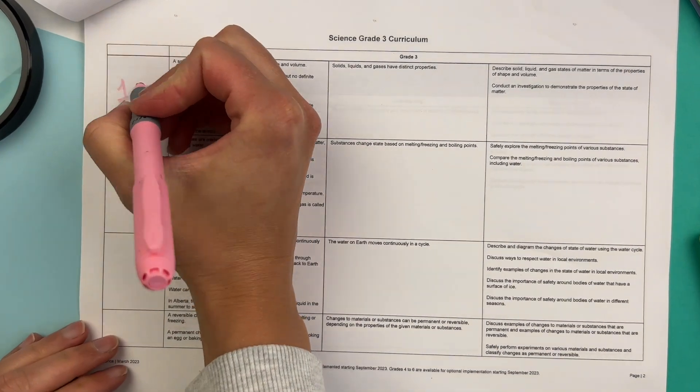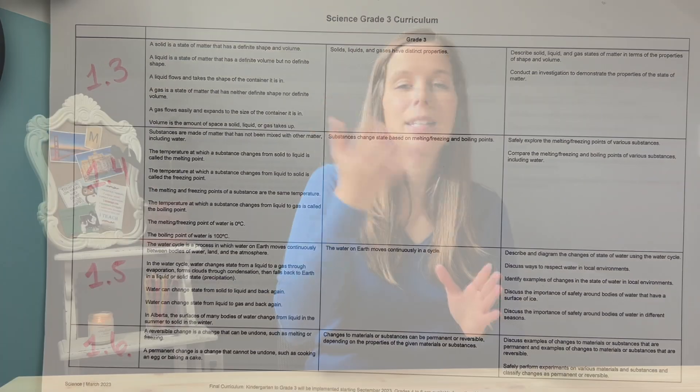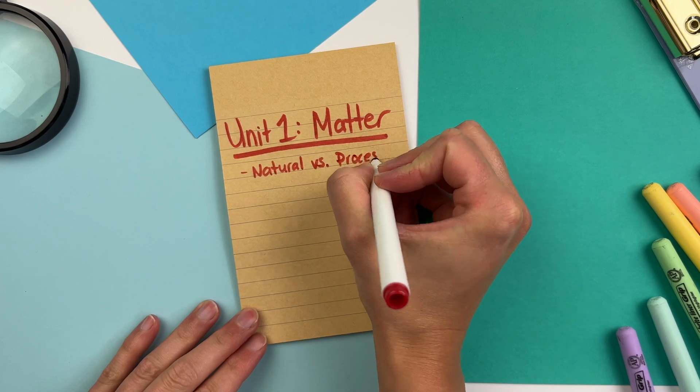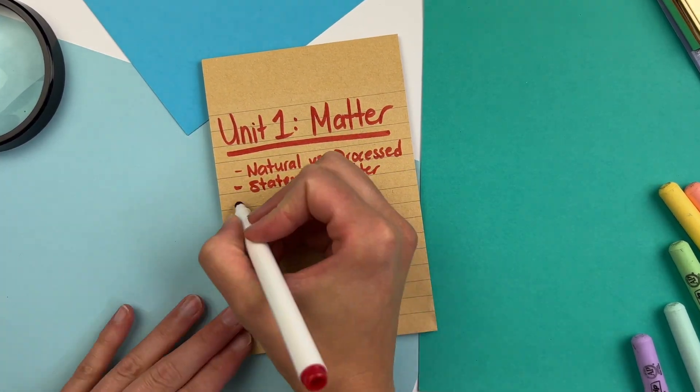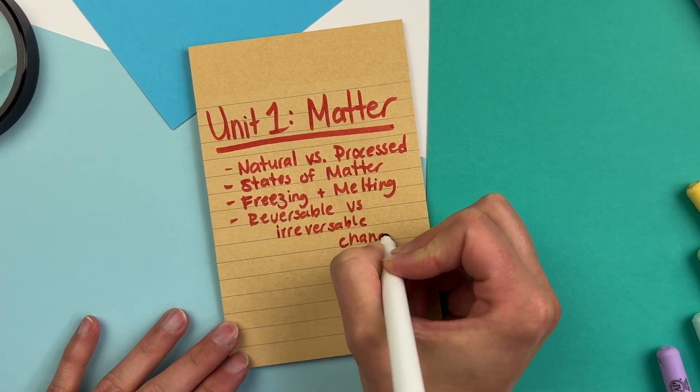There's also the water cycle — how water evaporates, condenses into clouds, and falls as precipitation. There's a lot about changing states of matter: solids into liquids into gas, and what can affect those changes. Some key vocabulary in this unit includes melting point and boiling point, and the last piece is reversible and irreversible changes. Those are all the topics covered in the first unit on matter.